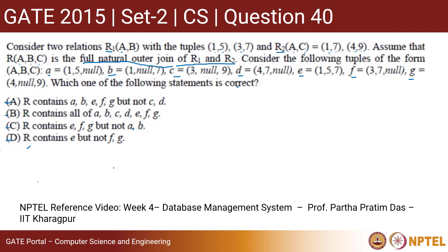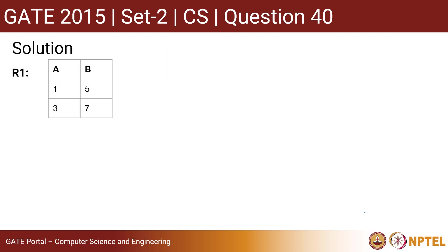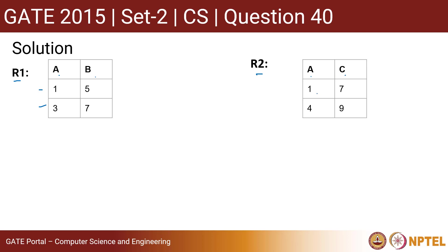For more detail on this topic, you may follow the NPTEL course on database management systems by Professor Partha Pratim Das. Let us go for the solution. We want to perform a natural join, and it is a full outer join, so it will be on the common attribute, which is A.